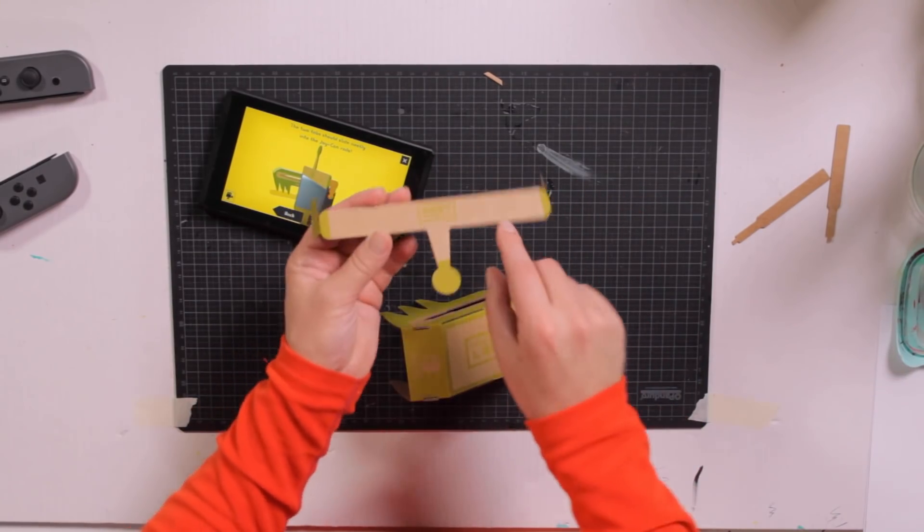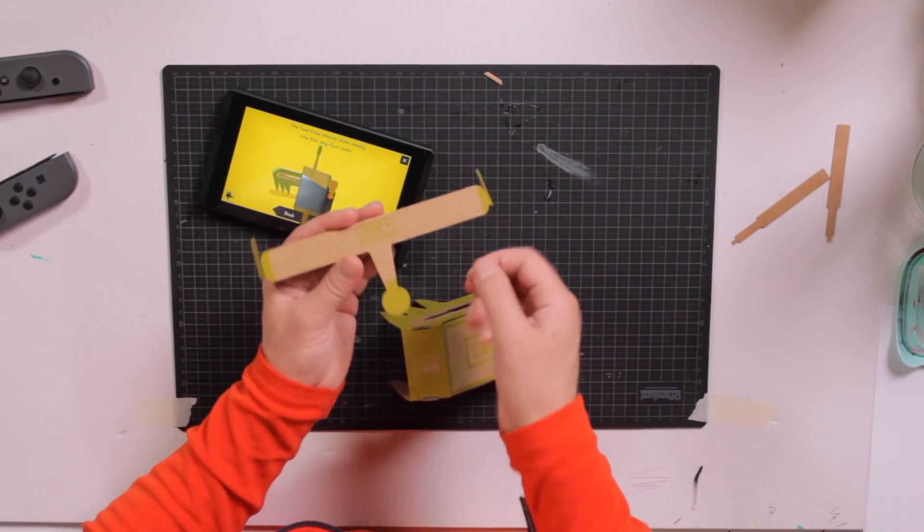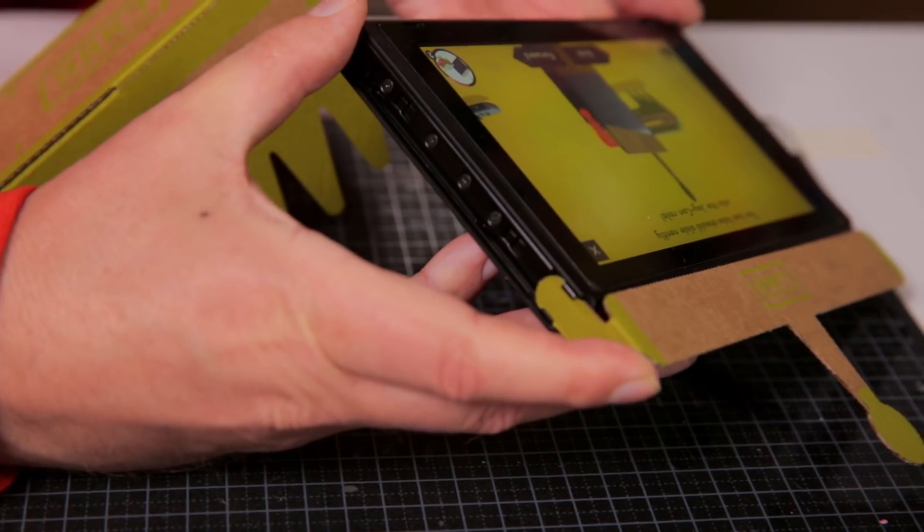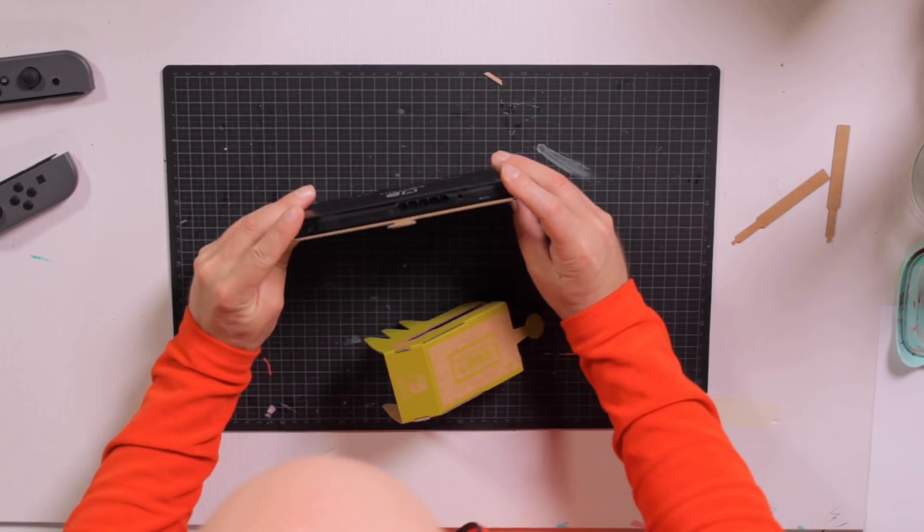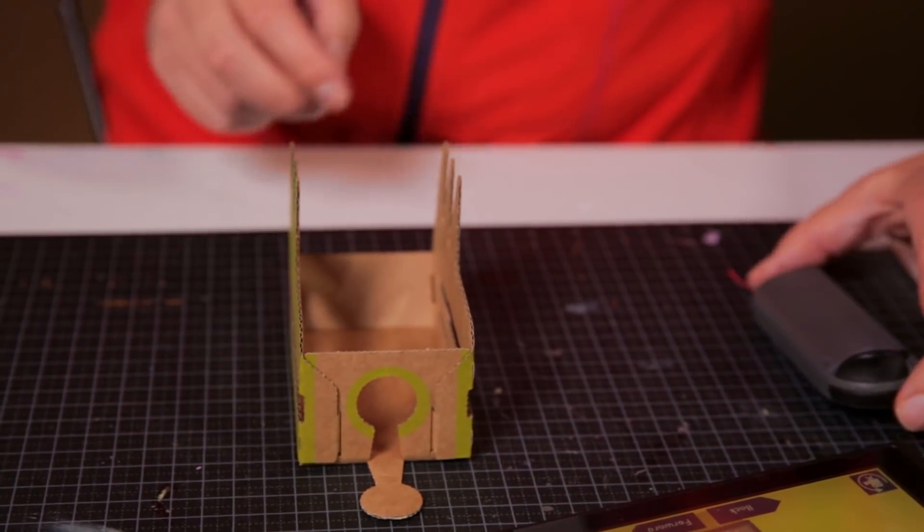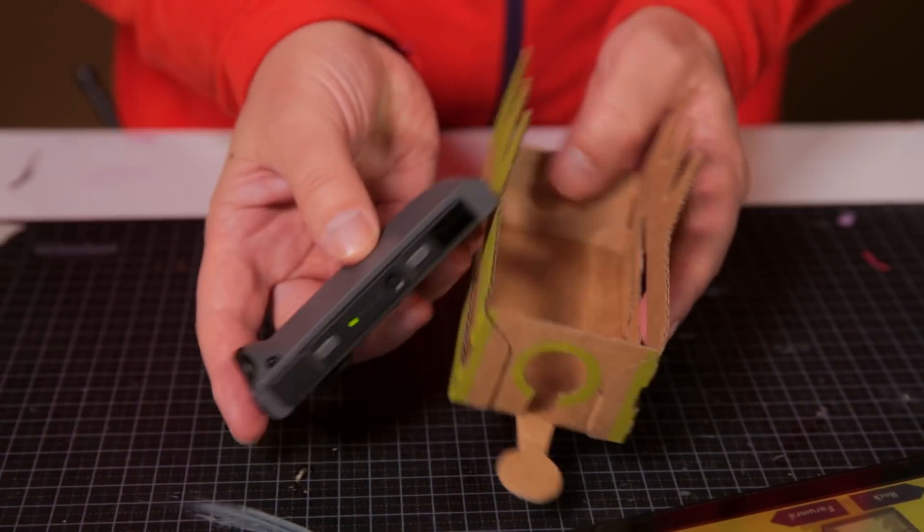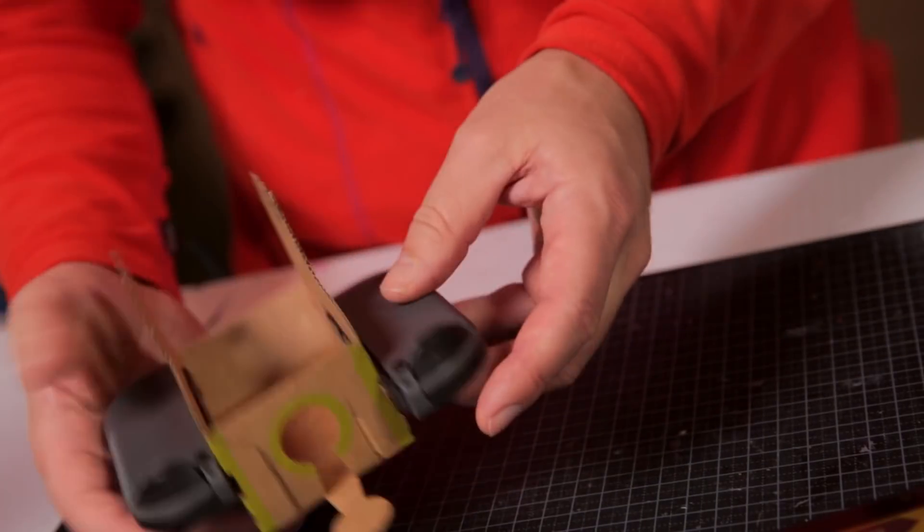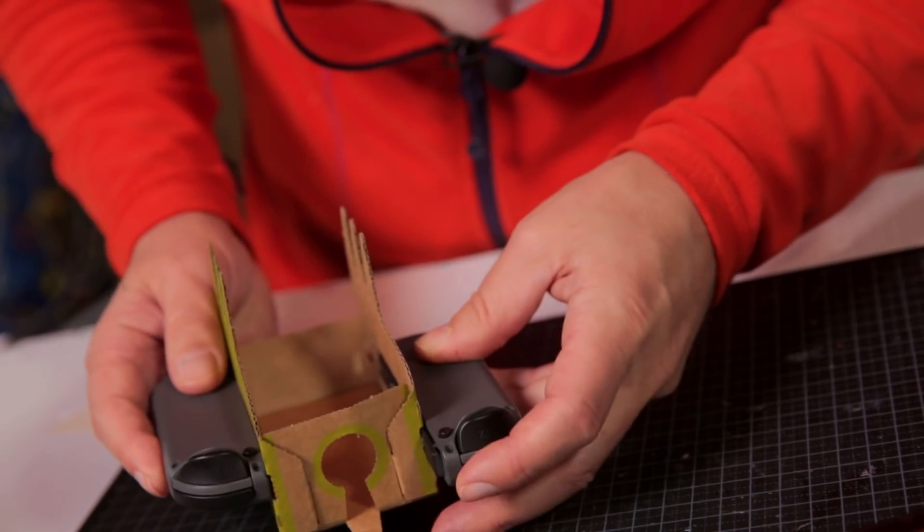Now time to attach the Switch and the Joy-Con. So you take the Switch like this, push it in here, and it's done. We're going to attach the Joy-Con. Turn it upside down and then push this in. Like that. And then the same thing with the other one.